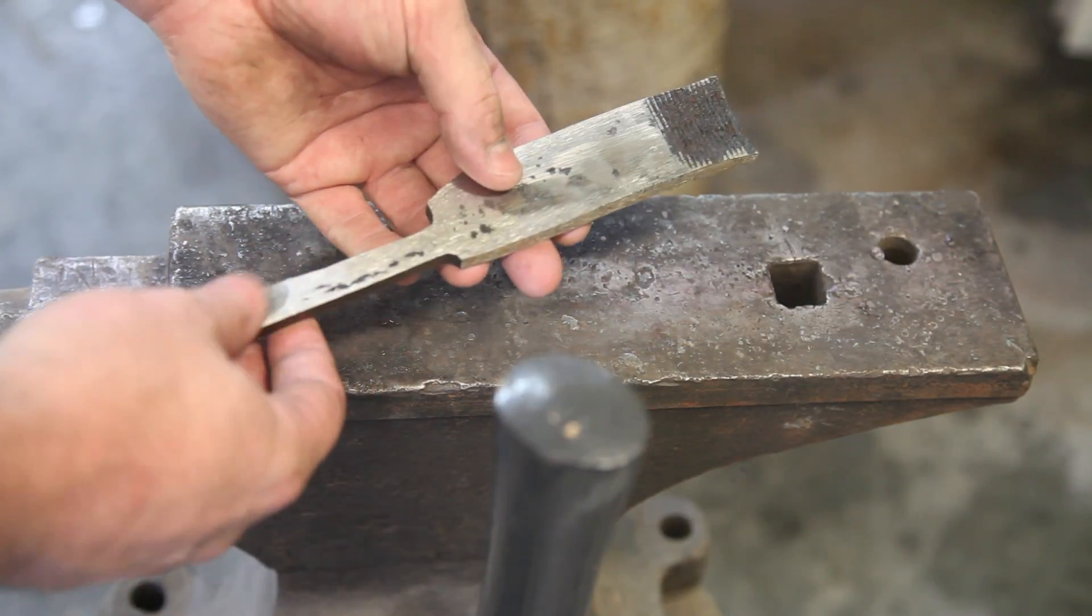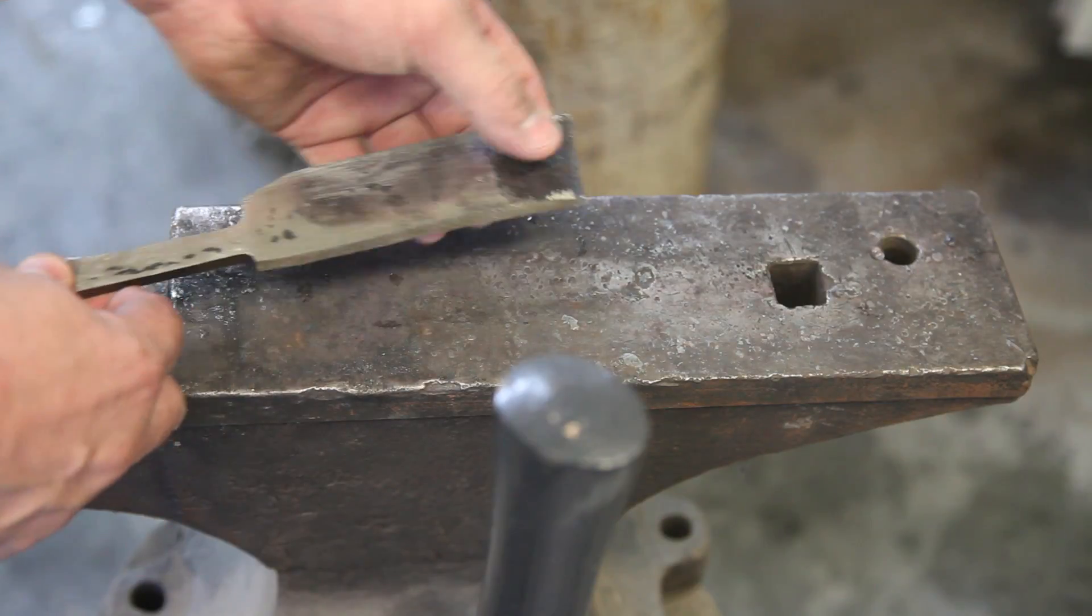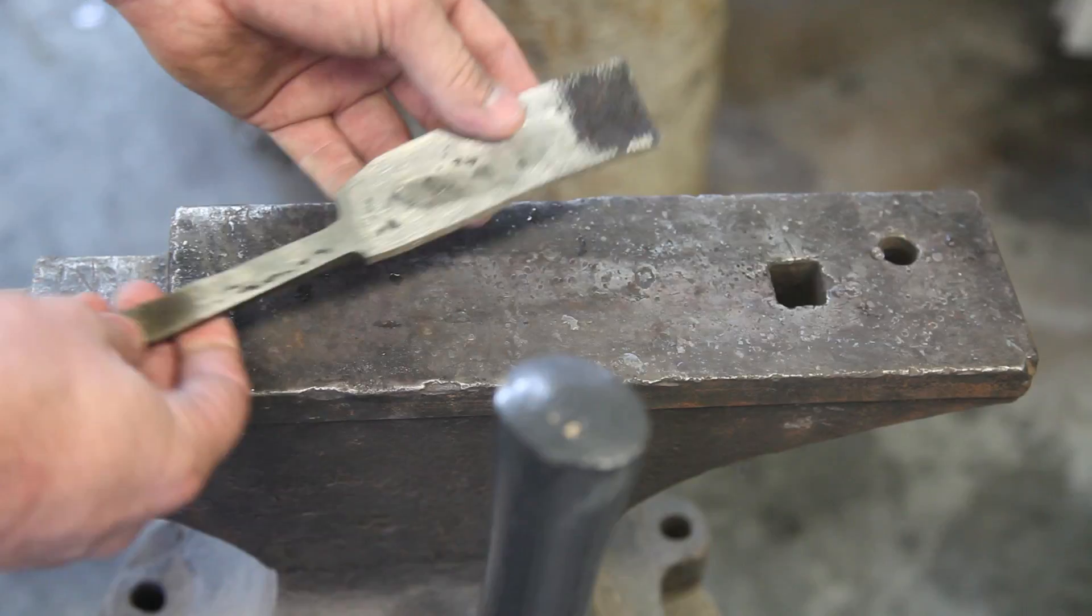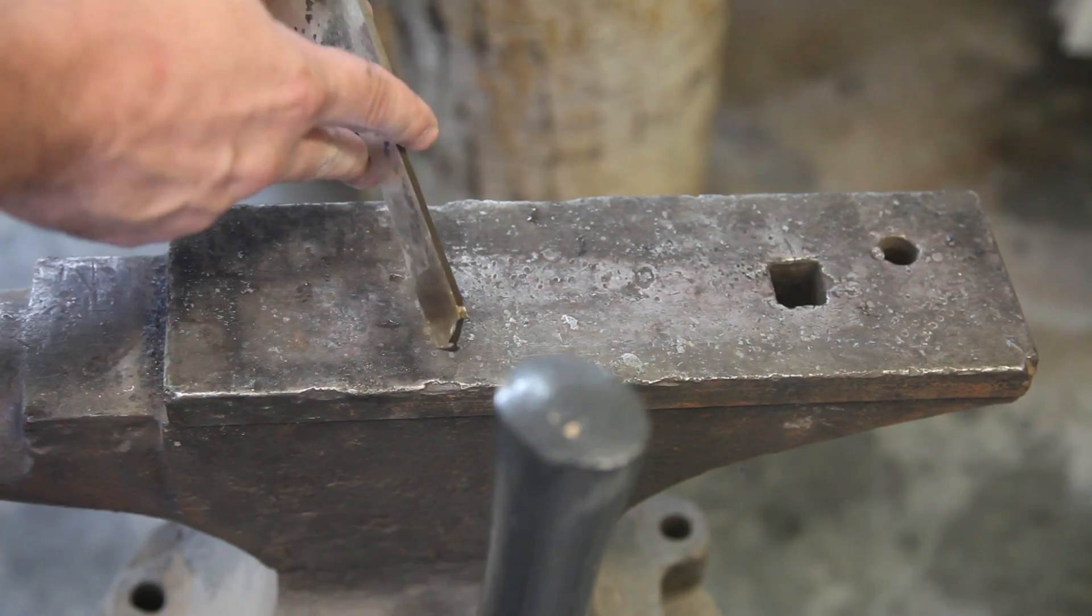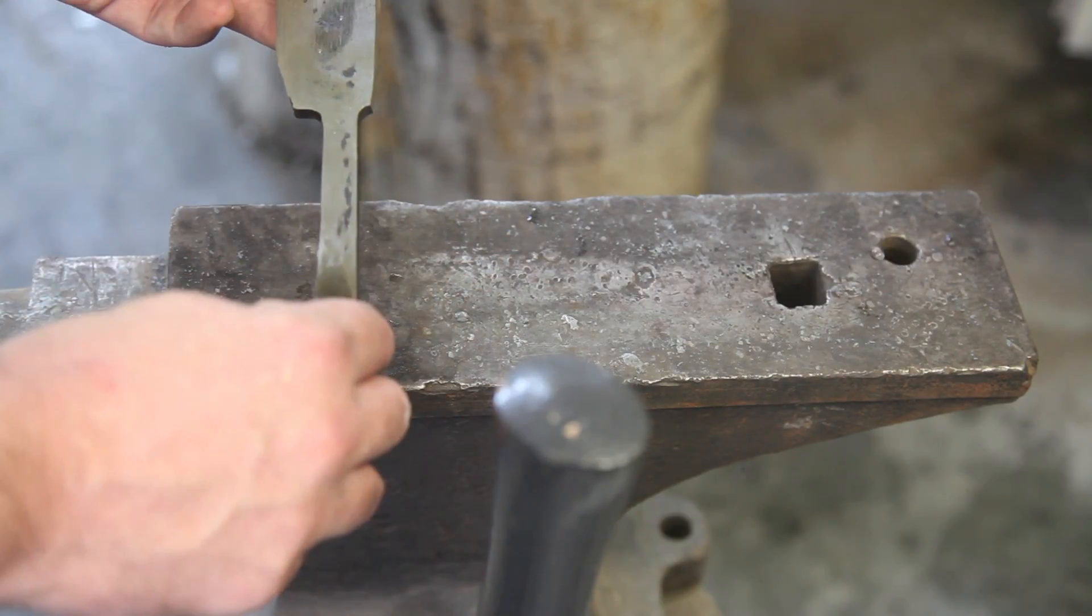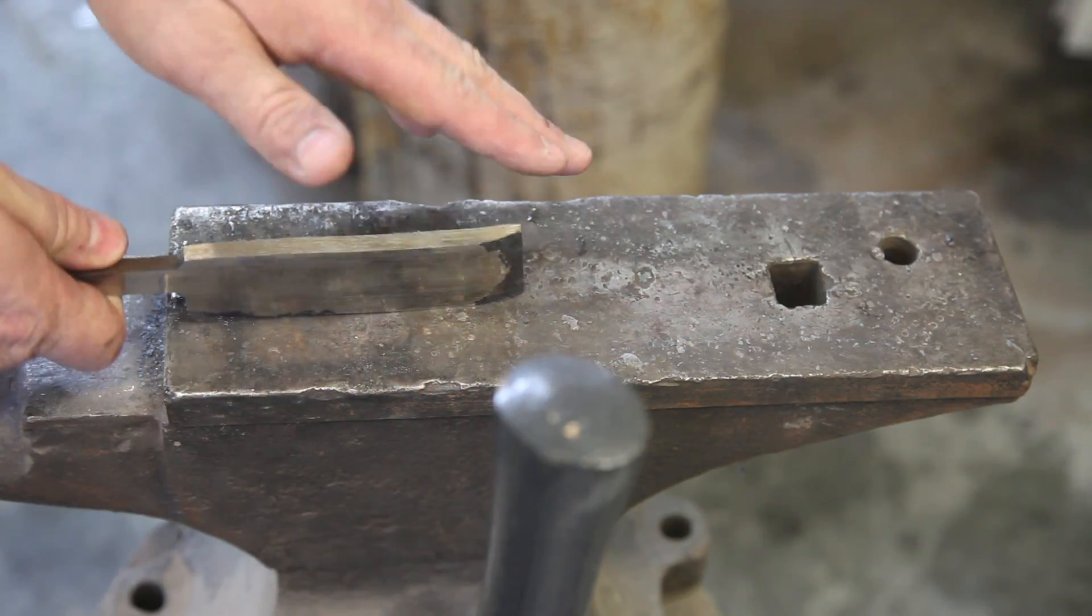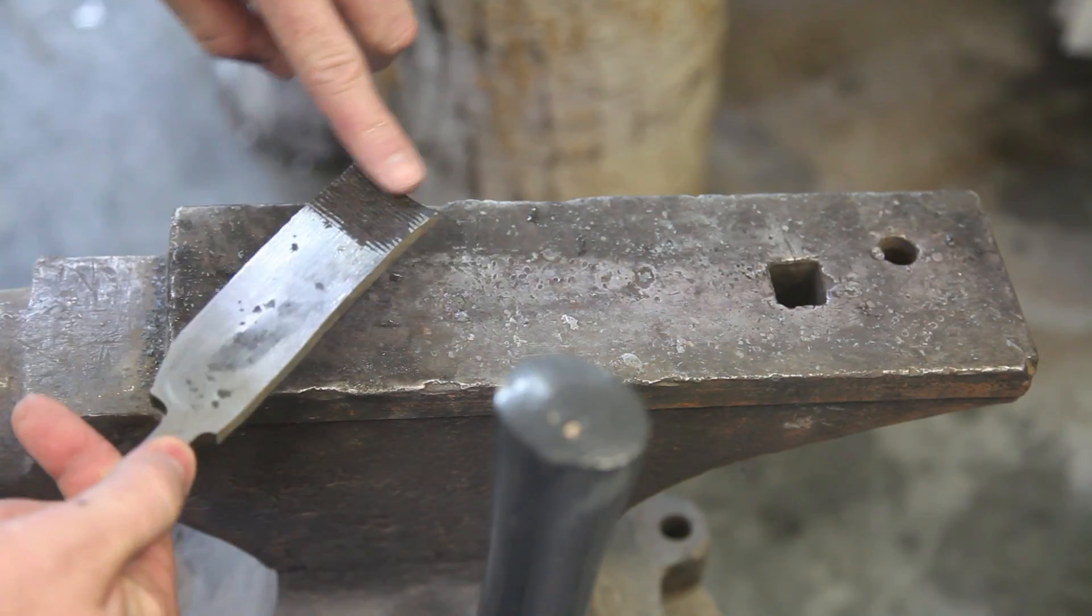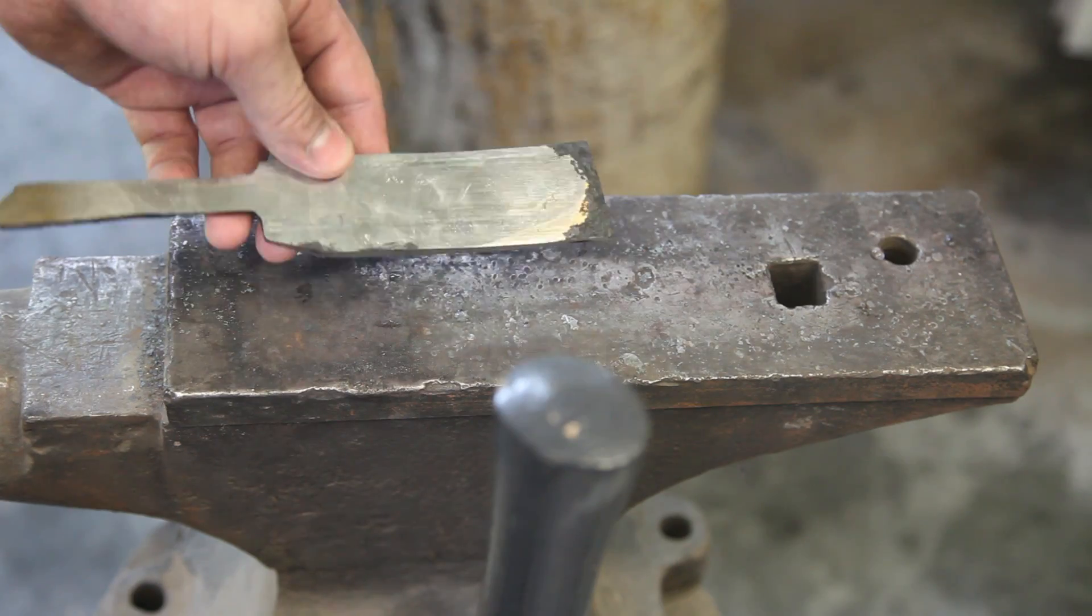So I've ground the surface down a bit. You can see those are the threads that were still at the bottom of the shell. And this was towards the top. So what I have to do now is I need to draw this tang out a little bit further. I don't think that's long enough for what I want to do for the handle. So I'll draw that out. And then the next thing I need to do is pound this down so that I can make the bevels.